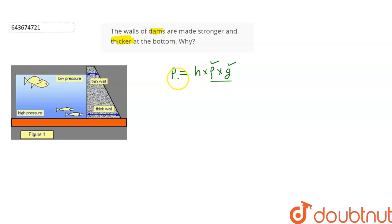So, the pressure only depends on the height. At this point, the height is, let it be h1, whereas at this point, let the height be h2. We can see that h2 is much greater than h1. So, the pressure at this point will be much greater than the pressure at this point.